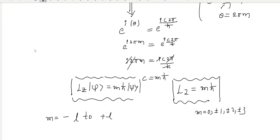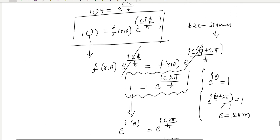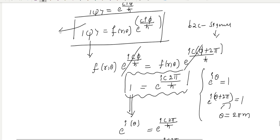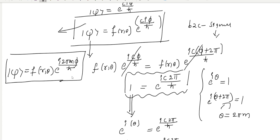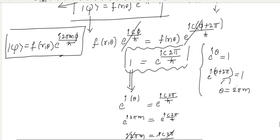This is the eigenvalue. The eigenfunction of Lz is: if we replace the C value, psi = f(r, θ) · e^(imφ). This is the eigenfunction of Lz. In the next class, we are going to discuss the eigenvalues and eigenfunctions of L-squared.